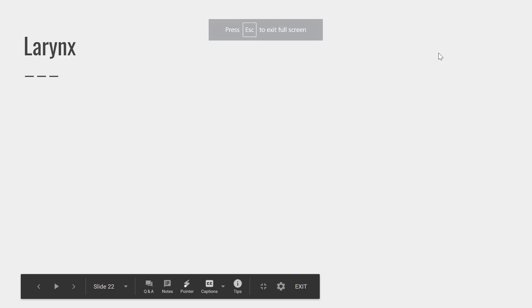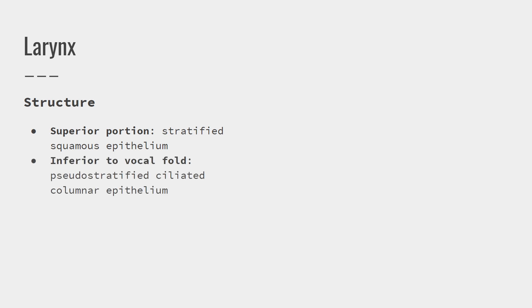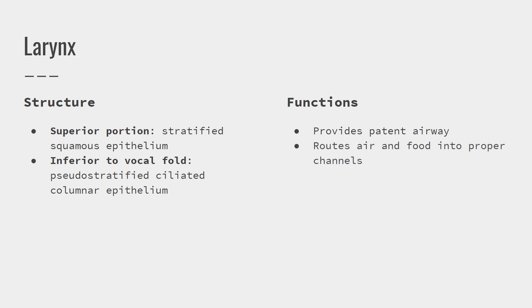Focus on the lower respiratory system starting with the larynx. The top portion of the larynx is made of stratified squamous epithelium, just like the oropharynx and the laryngopharynx, because there could be food there — we need that to protect against abrasion. The bottom part transitions back to our familiar respiratory mucosa, the pseudostratified ciliated columnar epithelium with goblet cells. Functions of the larynx: it provides a patent airway — patent means open. The larynx also has the epiglottis, so it functions in sorting air and food into the proper places: air into the trachea and food into the esophagus. And the larynx is responsible for voice production because it contains our vocal folds.